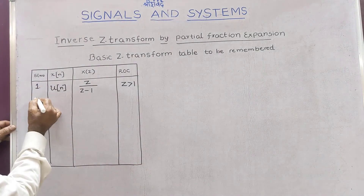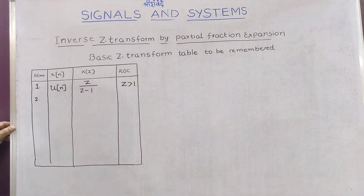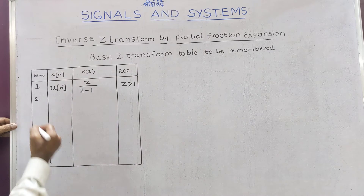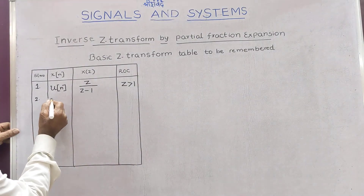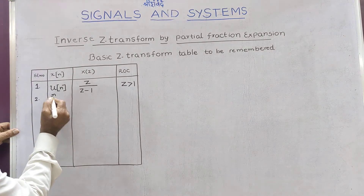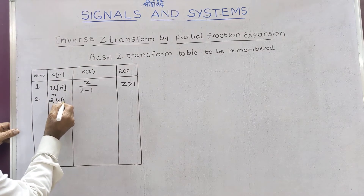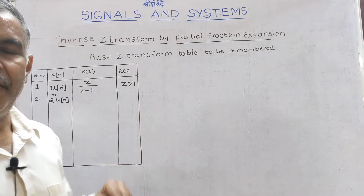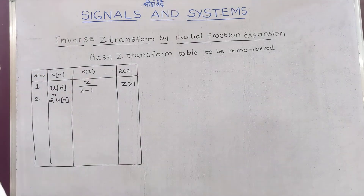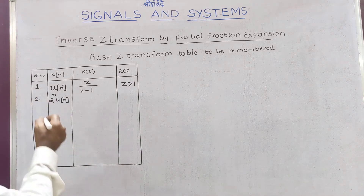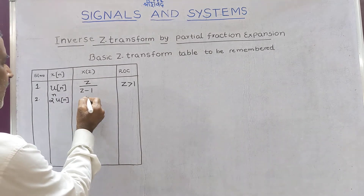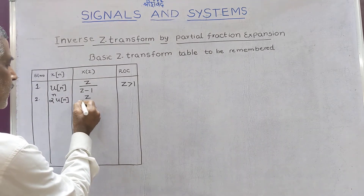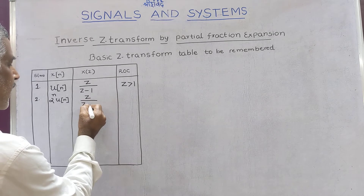Number two: sometimes we come across u[n] multiplied with an exponential sequence, that is α^n · u[n]. Here alpha may be positive or negative. The Z transform of α^n · u[n] is given by Z over Z minus α.